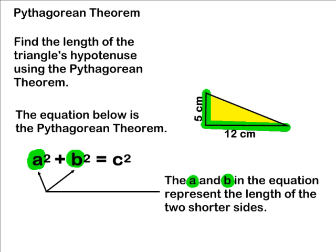For the triangle shown on the screen, that would be 5 centimeters and 12 centimeters. Using that information and the Pythagorean Theorem, we can figure out what the length of the triangle's hypotenuse is.